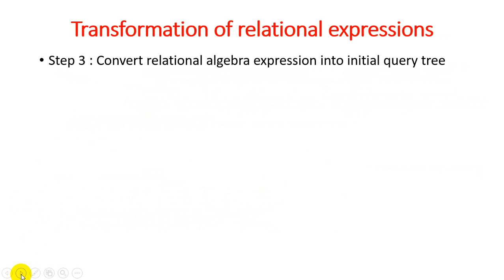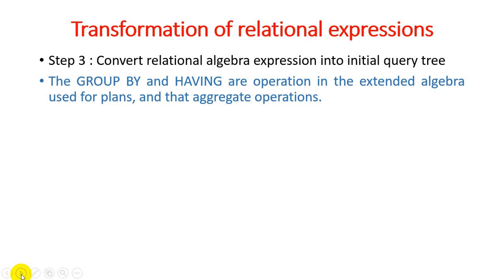The third and final step: convert your relational algebra expression into the initial query tree. If we have a query tree, we can easily identify and estimate costs based on it. So: step one — decompose your complex SQL query into the simplest form; step two — convert it into relational algebra; step three — convert the relational algebra query into the initial query tree. The root node always represents the operation that generates the final output. Since the final result is the selection of l_name and f_name, that is placed at the root node.